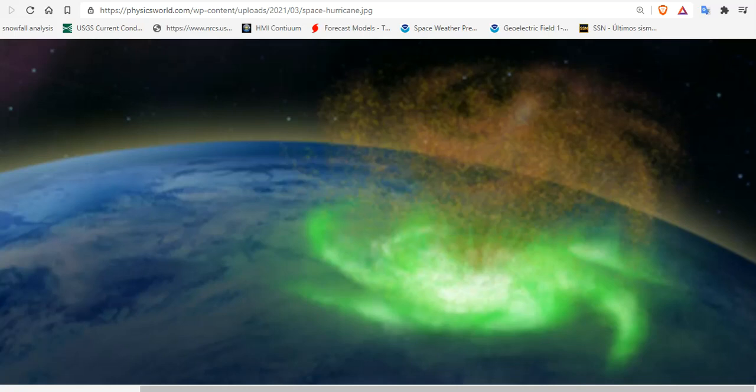The analysis allowed a 3D image to be created of the 1,000 kilometer wide swirling mass of plasma several hundred kilometers above the North Pole, raining electrons instead of water.